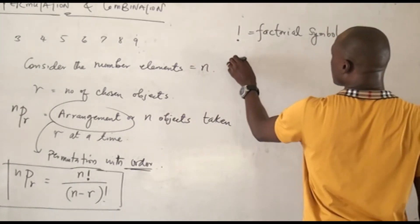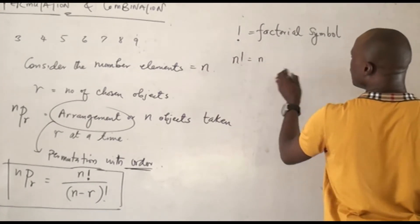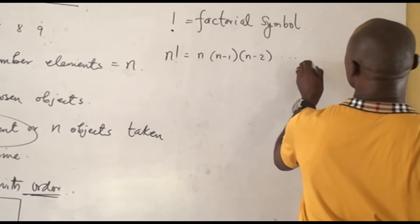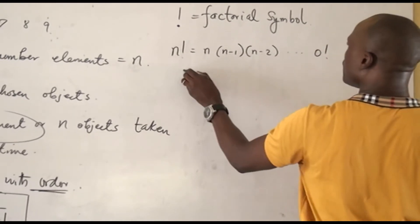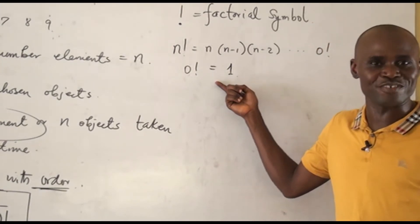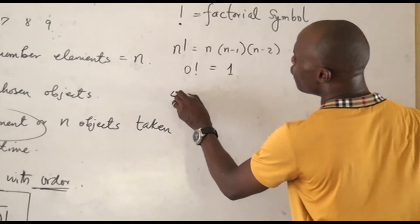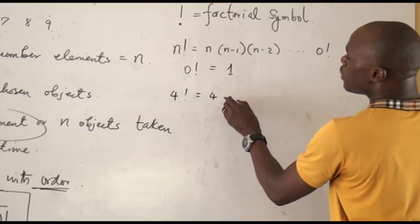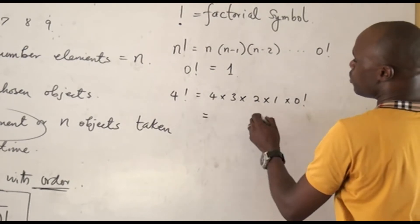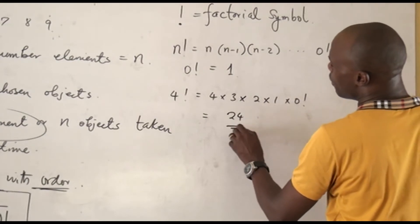What I mean by the factorial symbol: if we have N factorial, it is the same thing as N times N minus 1 times N minus 2, and you continue this until you get to 0 factorial. Note that 0 factorial equals 1. There is a proof for this but I am not going to cover that now. So if I have 4 factorial, it is going to give me 4 times 3 times 2 times 1 times 0 factorial, which is 4 times 3 equals 12, times 2 equals 24.